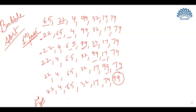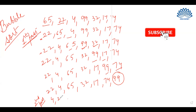Since there were 7 elements in the list, the 7th position is now sorted. We have to consider the remaining 6 elements. We'll compare the first two elements: 22 and 4. Since 4 is smaller than 22, we will swap them.